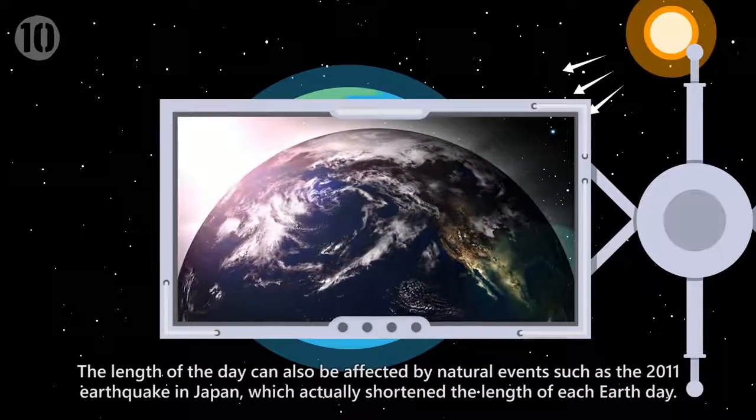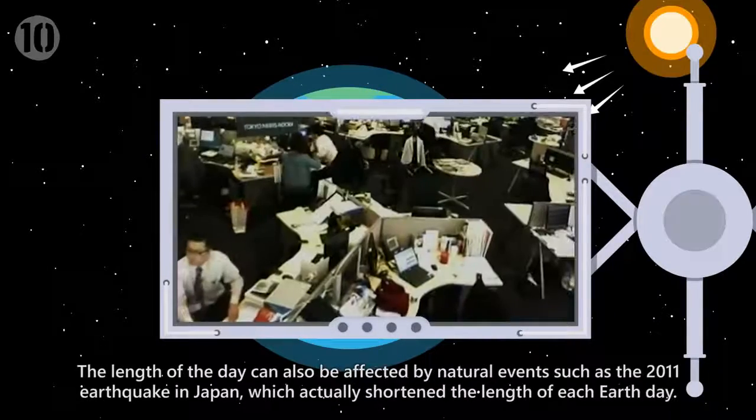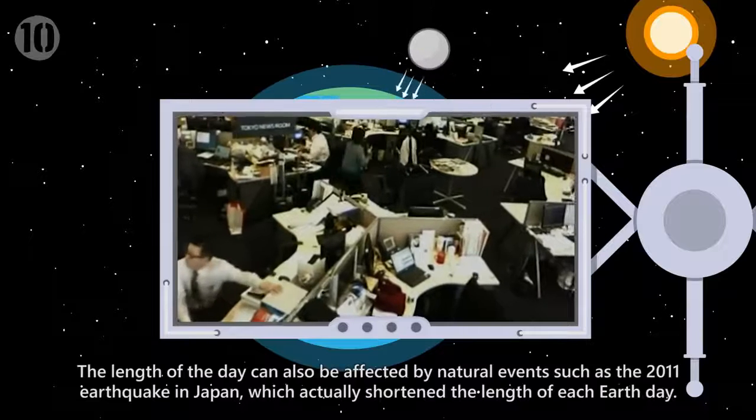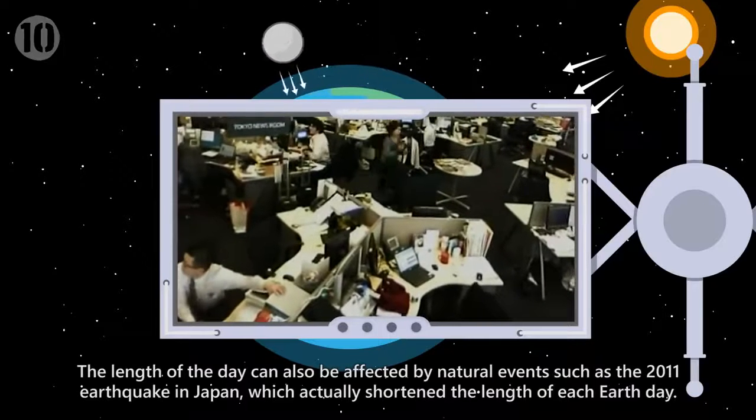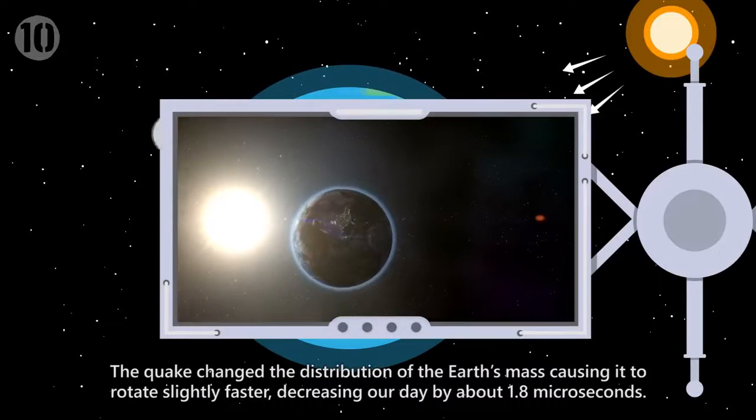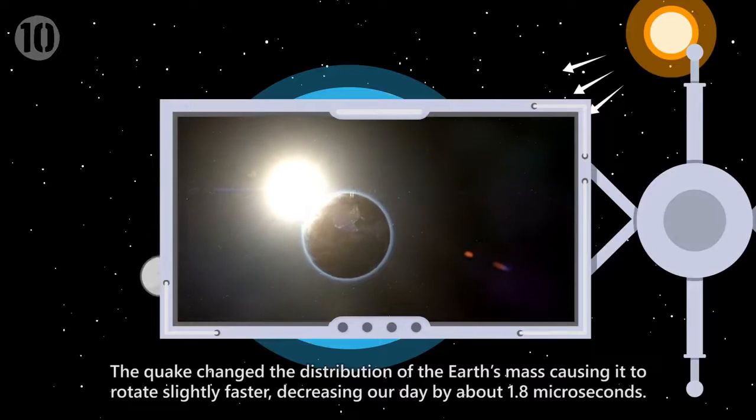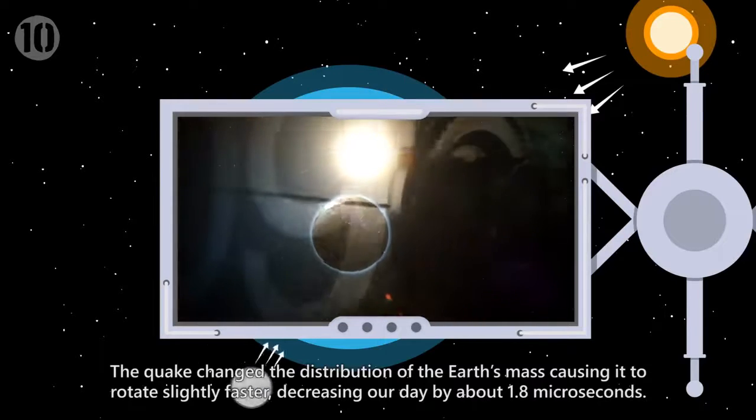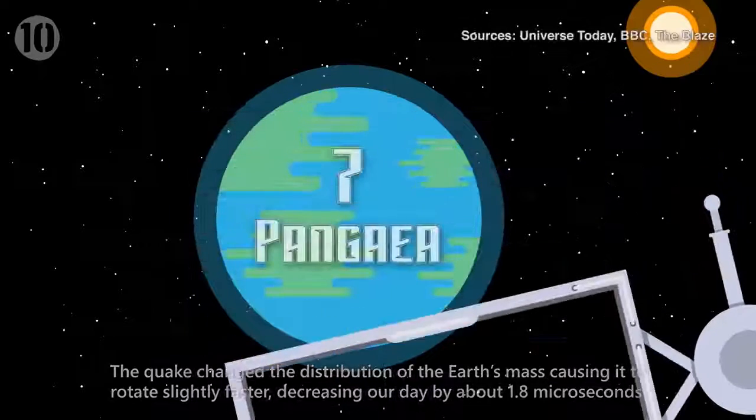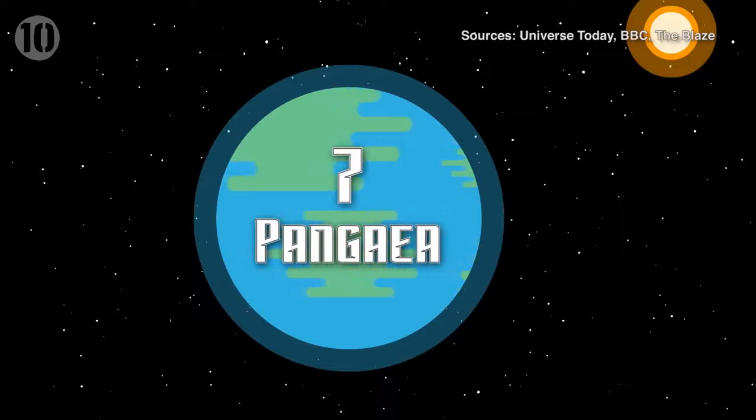The length of the day can also be affected by natural events, such as the 2011 earthquake in Japan, which actually shortened the length of each Earth day. The quake changed the distribution of the Earth's mass, causing it to rotate slightly faster, decreasing our day by about 1.8 microseconds.